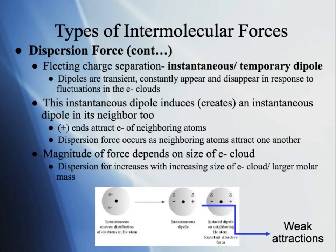Even though dispersion forces are super weak, the heavier you get and the bigger the electron clouds, the stronger the attraction they're going to have to each other. So they're going to range from super weak to a little stronger than weak. That is the dispersion force — present in every single type of molecule or atom, and increasing in magnitude with electron cloud size.